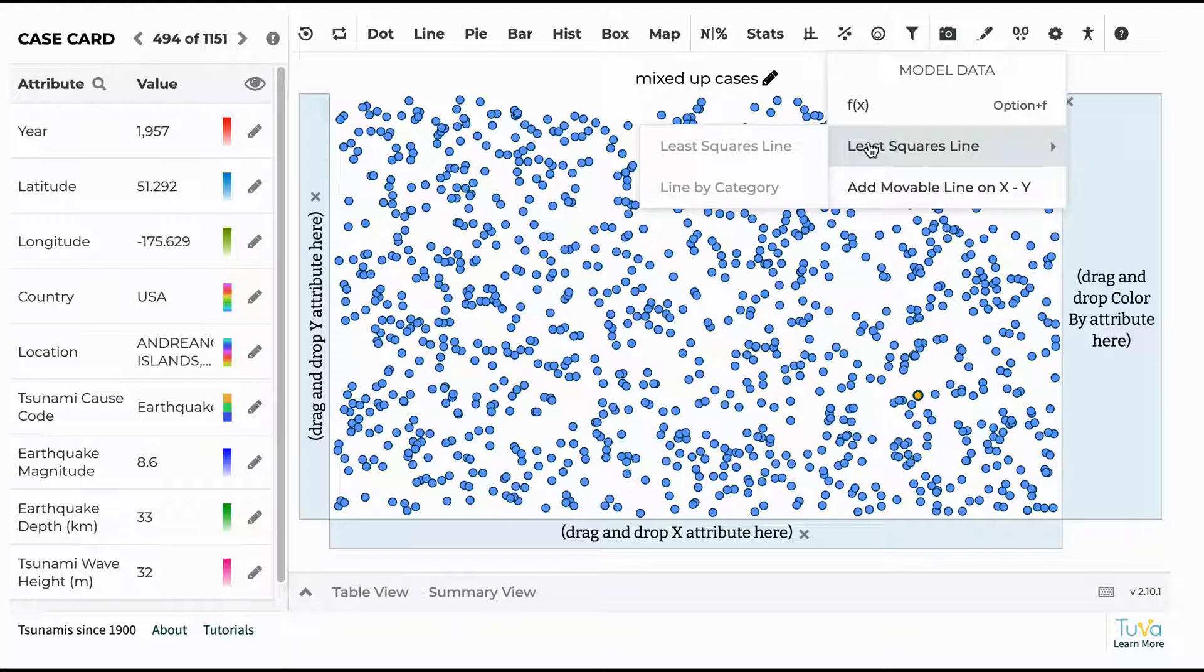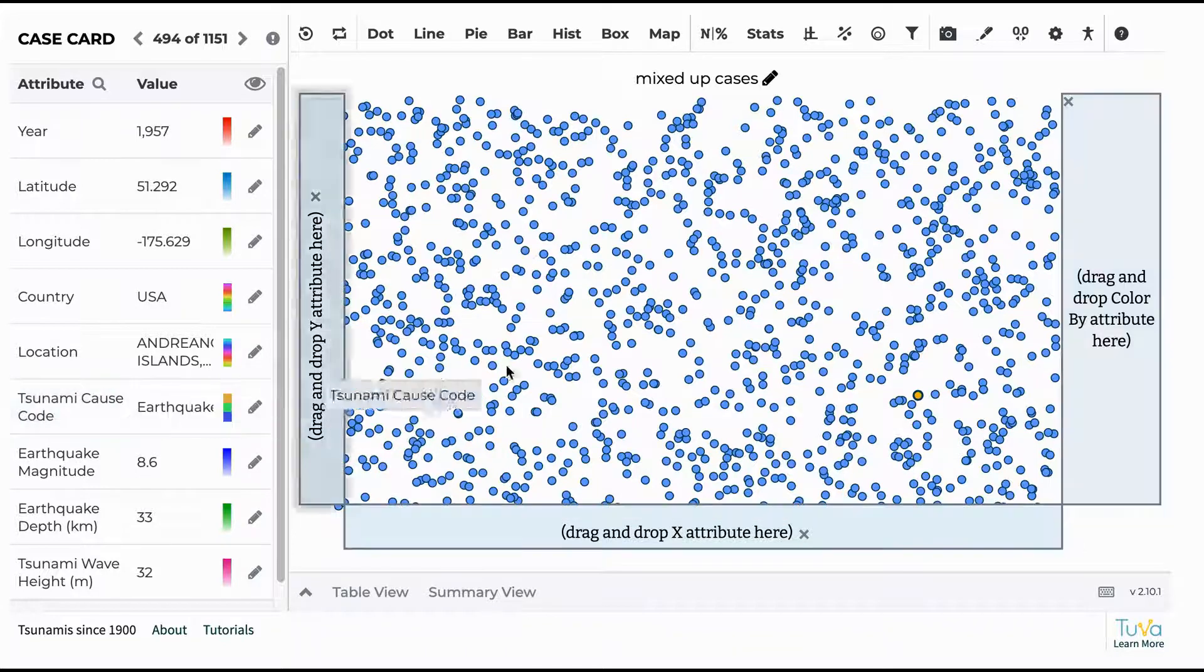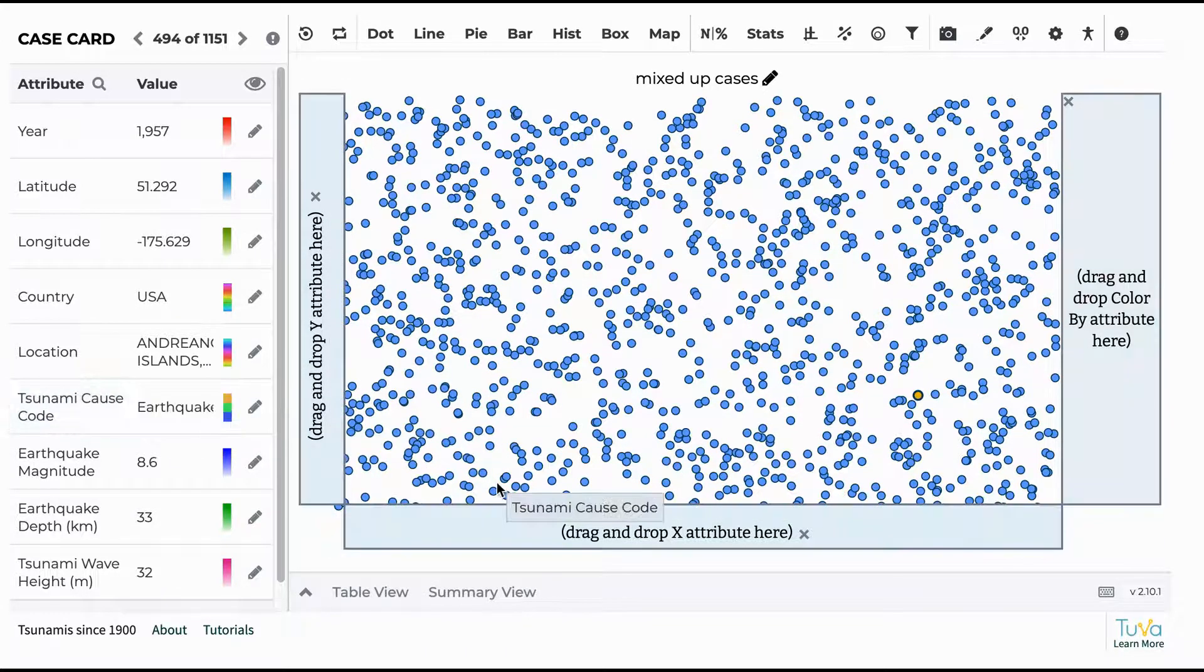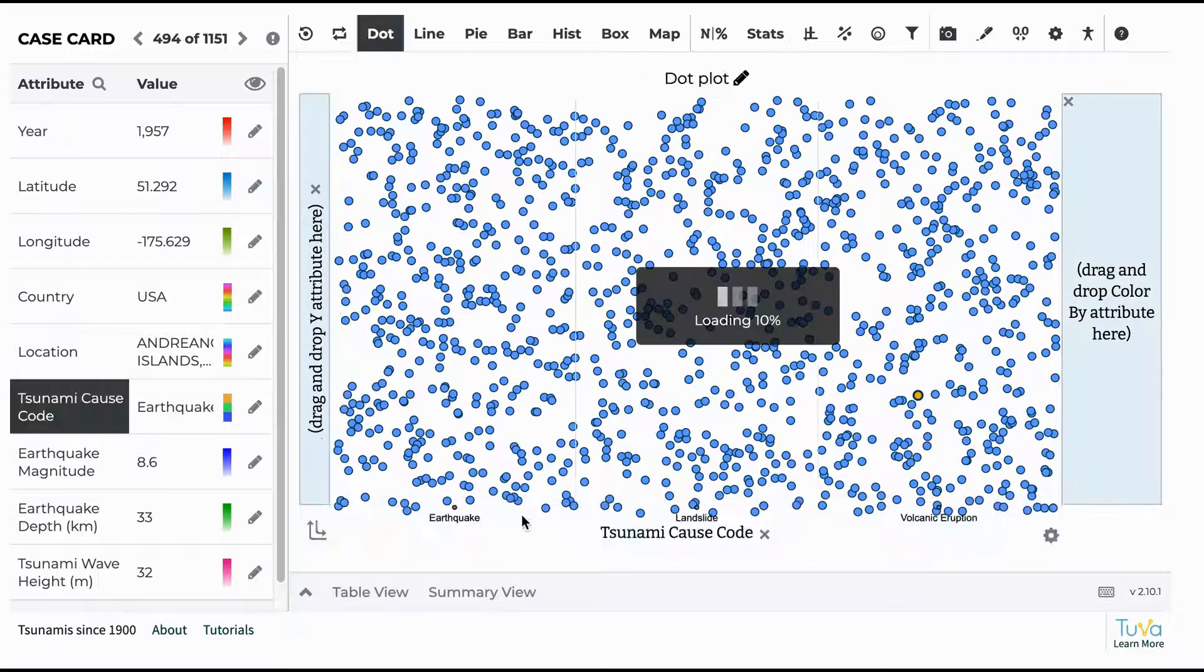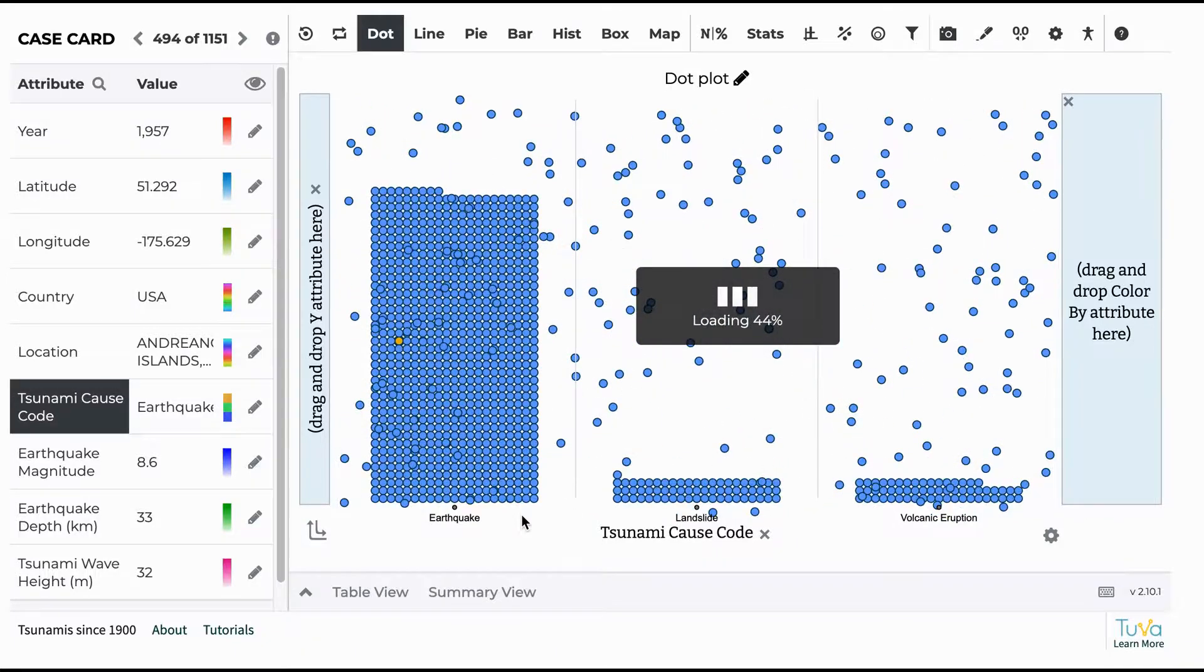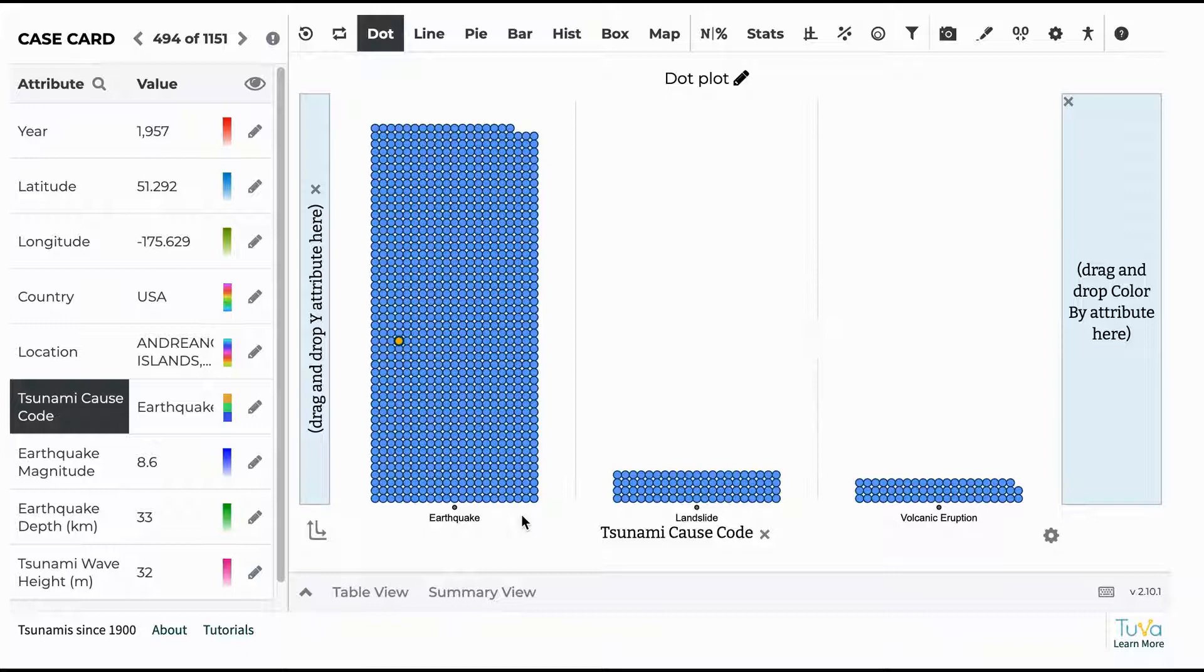A couple of other things that they can do while they're in here is look at the causes of tsunamis. So they've been actually figuring out from the maps what causes the most tsunamis. And so they can actually check their thinking around this and they'll see that yes, earthquakes cause a whole lot of tsunamis, landslides and volcanoes can cause them too, but just not as many. So that's another thing that they can do here if they're interested.